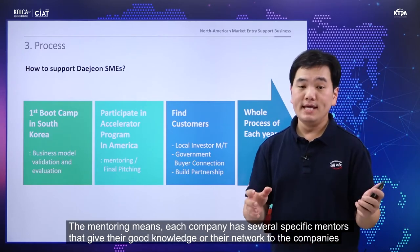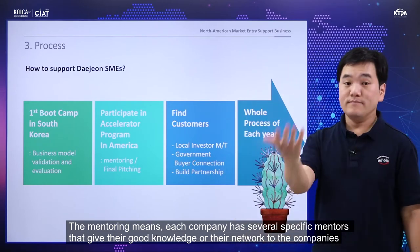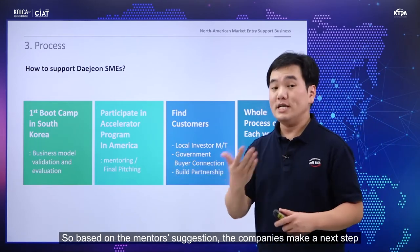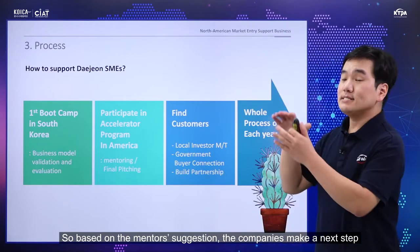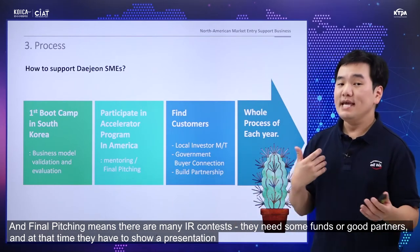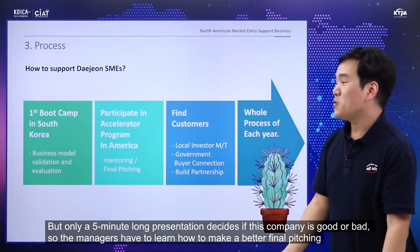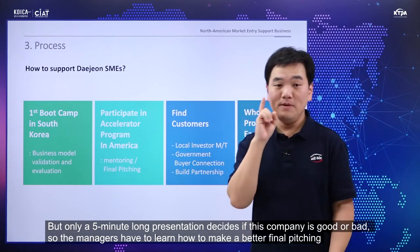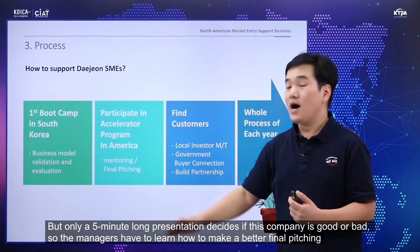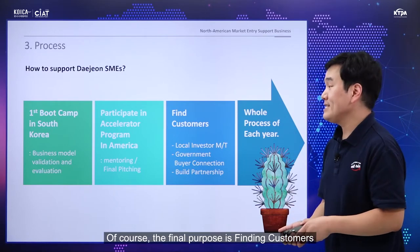The mentoring means each company gets several specific mentors who give their knowledge and network to the companies. Based on the mentors' suggestions, each company makes their next steps. For final pitching, there are many IR contests where companies need funding or good partners. They have to show their presentation — sometimes only five minutes to decide if a company is good or not. So managers have to learn how to make a better final pitching. The final purpose is to find customers.